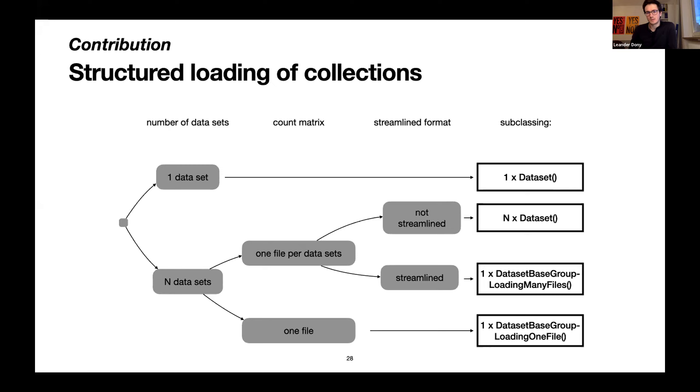One question from the chat: Olga was asking about study attributes users can provide in the data loaders — for example, when you provide the state_exact, do we enforce any schema or vocabulary? For instance, diabetes versus diabetic. The state_exact is right now by definition a free text field. What we want to add is a disease field which would be constrained by a disease ontology, so 'diabetic' or 'diabetes' would then be constrained. We'll likely keep the state_exact field as a buffer for information that can't yet be easily dealt with elsewhere.